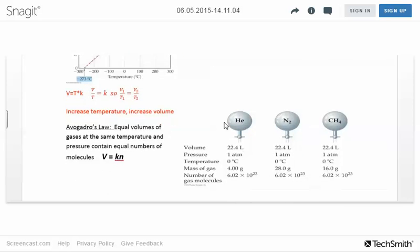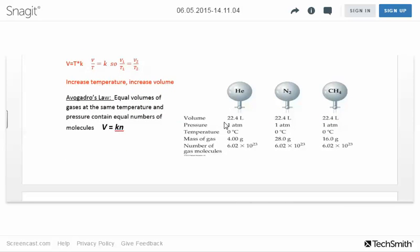The final law here is Avogadro's law. Avogadro was looking at how volume is related to the number of moles of gas. He found that if you filled balloons to 22.4 liters with helium, 22.4 liters with nitrogen, and 22.4 liters with methane, they all had the same number of particles. They all had one mole - 6.02 times 10 to the 23 molecules.